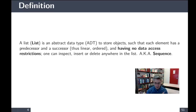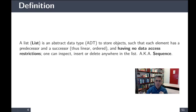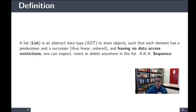A list is a linear abstract data type that allows us to store elements in a linear fashion, meaning each element has one before and one after, except if you're the first or last element. Sometimes we say it's an ordered data structure. We've already seen linear data structures — the stack and the queue — which were also linear but had restricted access.